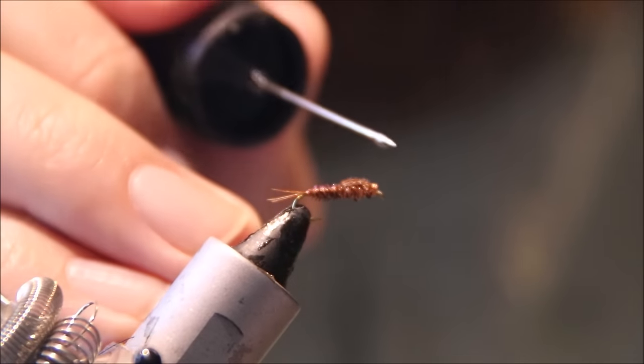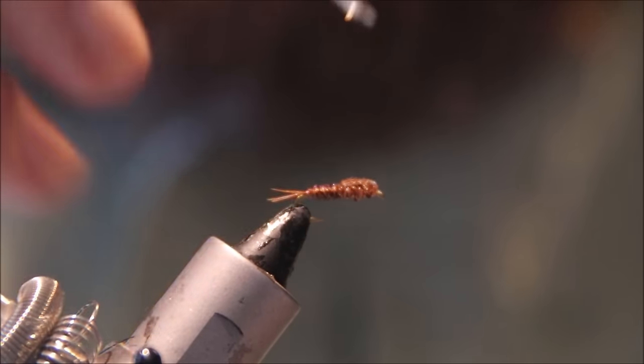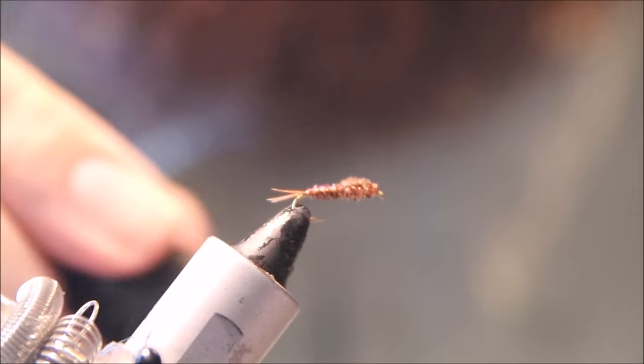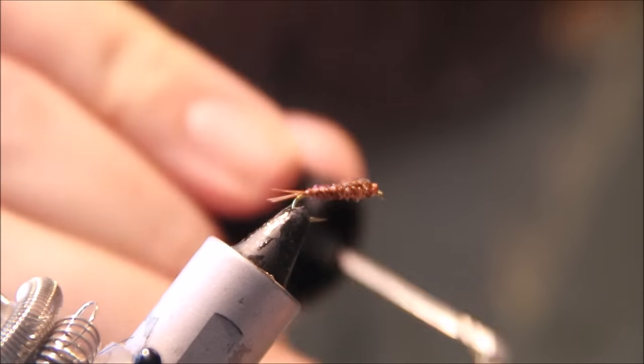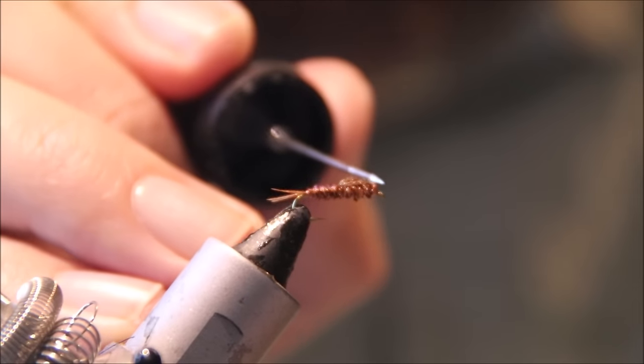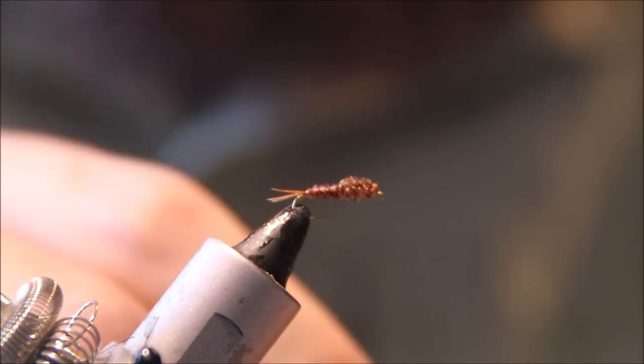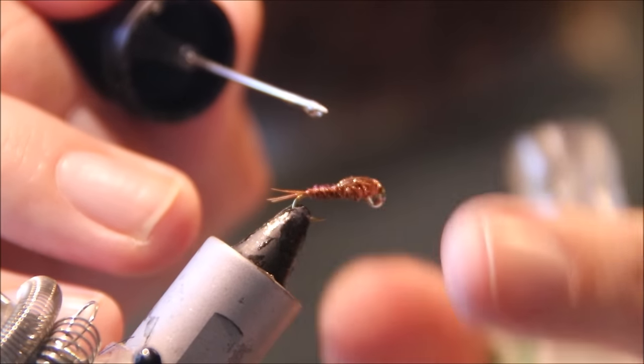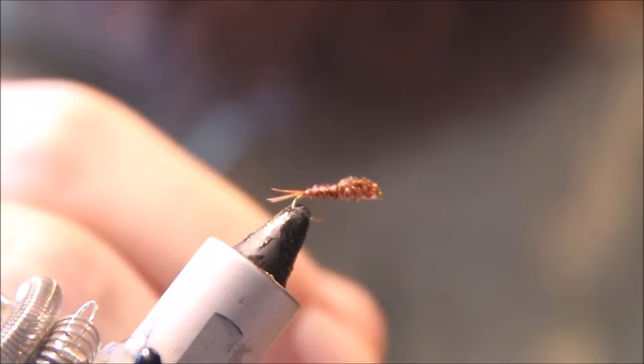I like to just come in now with some head cement. You can use super glue if you like, but I find head cement sufficient. I coat the back of the thorax cover as well, just for a bit of added durability. Make sure the eye is clear.